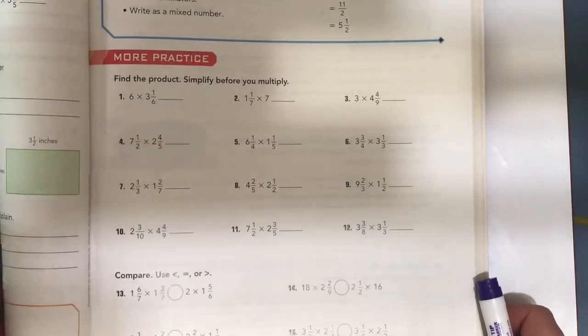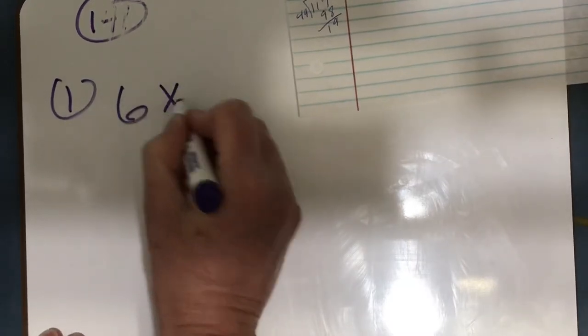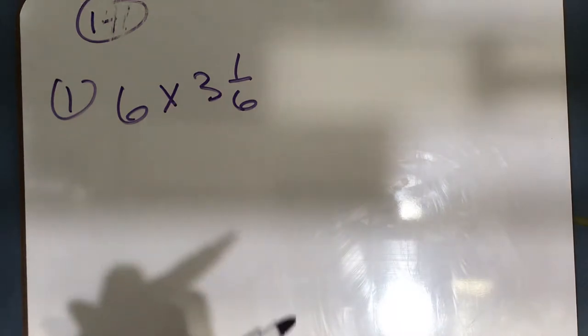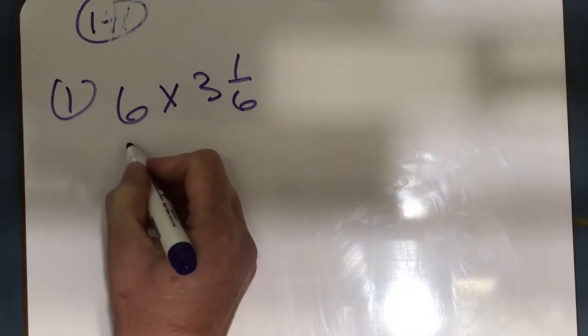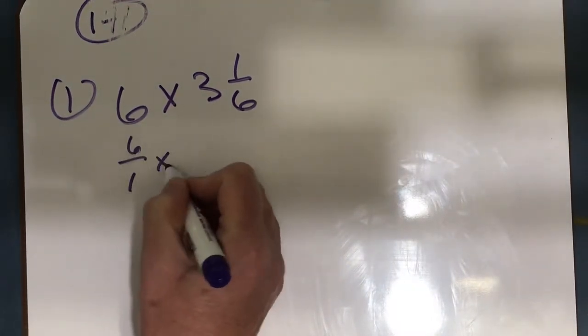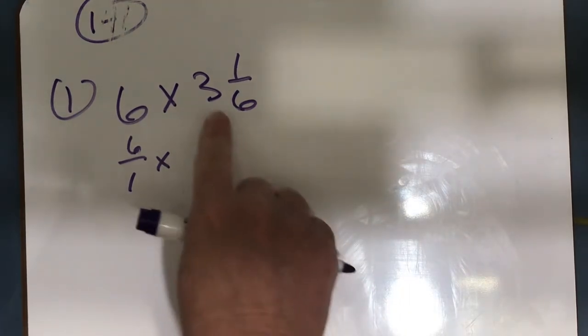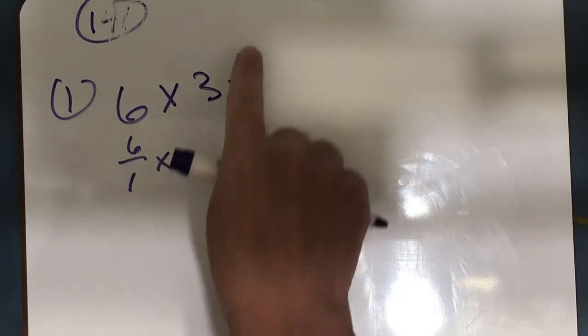I'm going to start with number 1: 6 times 3 and 1 sixth. So first I have to change 6 to a fraction, 6 over 1, and then I need to change 3 and 1 sixth to an improper fraction. So 3 times 6 is 18 plus 1 is 19, so 19 sixths.